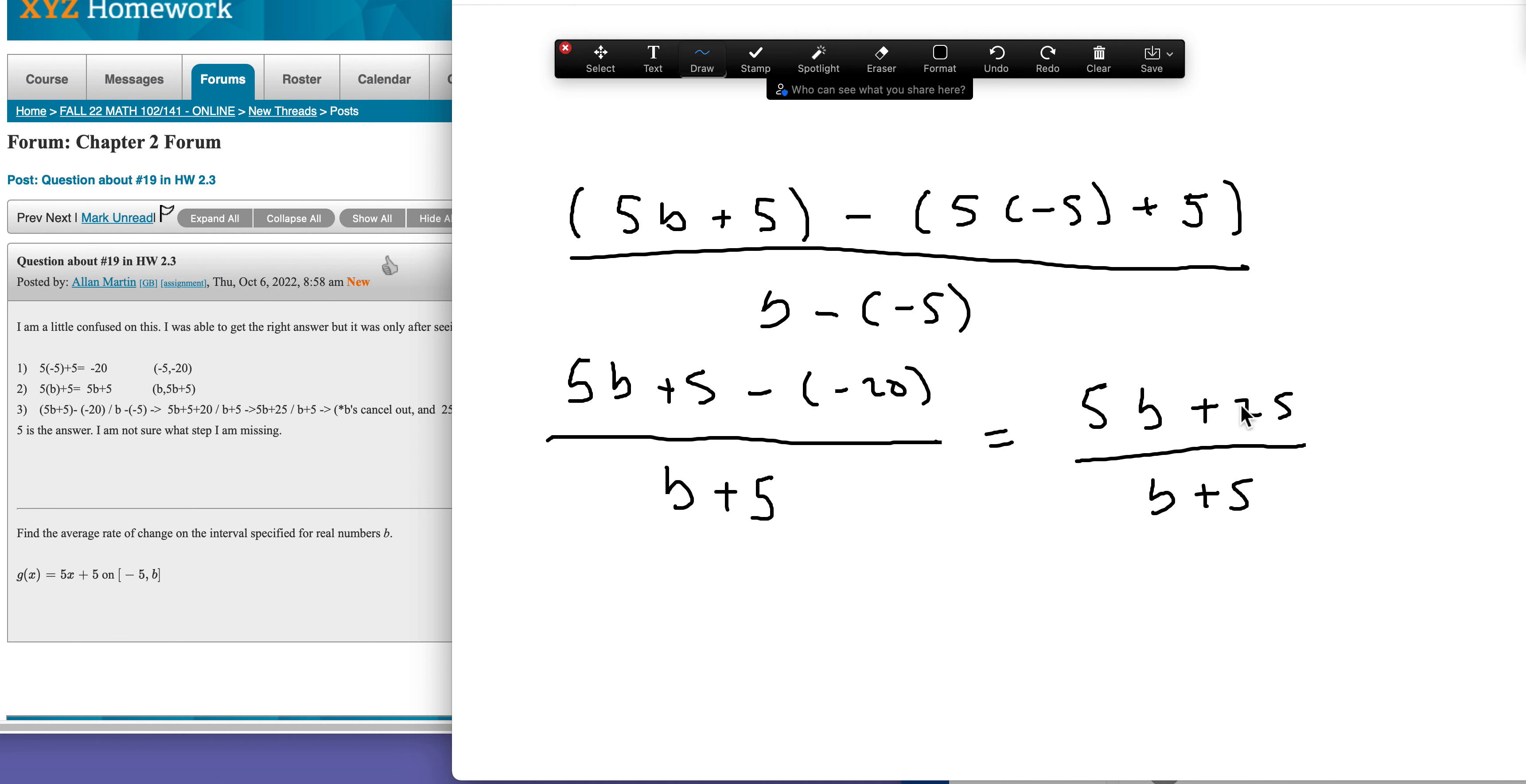So I'm going to factor out a 5 from the numerator, and that's going to leave me a b plus 5. And so now you can see I have that written as multiplication.